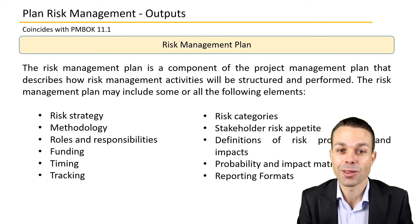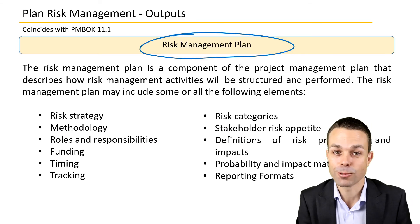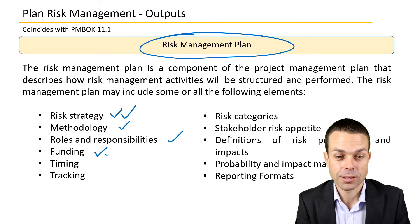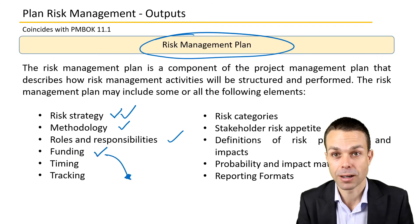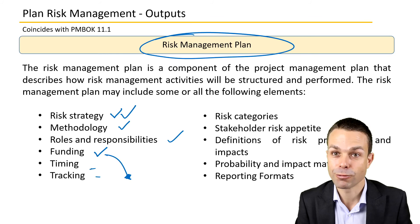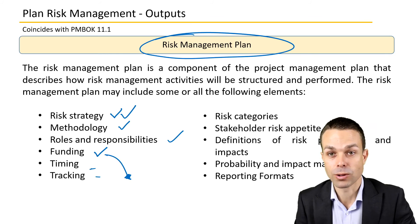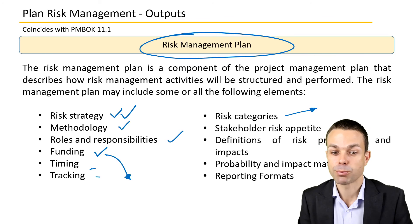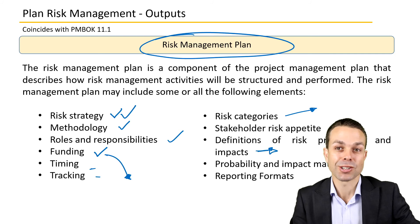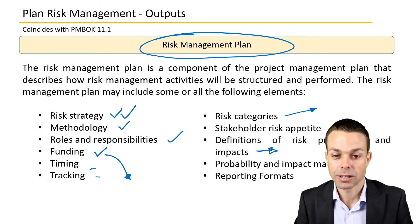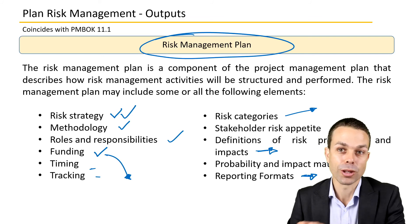The output of this process is the risk management plan itself. The risk management plan can include: the overall risk strategy, the methodology for gathering risks, roles and responsibilities in risk management, funding for risks — whether we have a contingency fund or management reserves for unknown risks — the timing and tracking of risks, risk categories, definitions of risk probability and impacts, and reporting formats. Once we've found our risks, we need to assign the likelihood of them happening and the impact, so that we know how serious they are and how we're going to report them to the overall project.